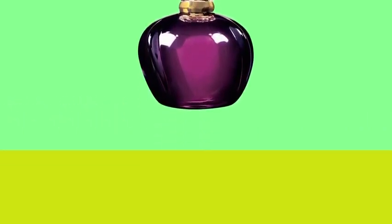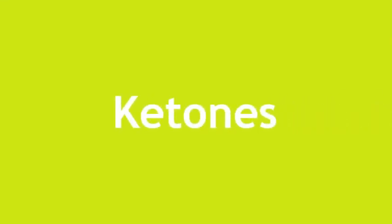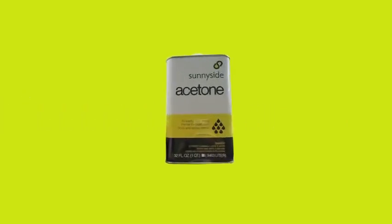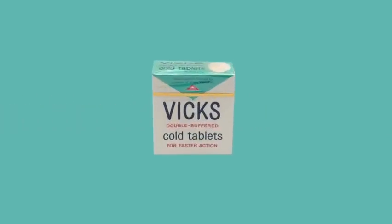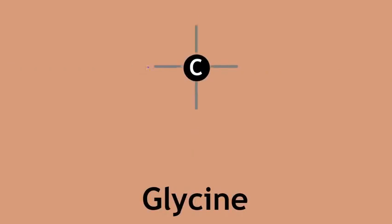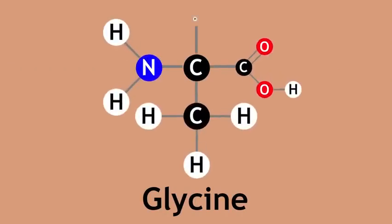There are lots more functional groups. Esters which give molecules a sweet smell and make them useful for perfumes and flavourings. Ketones which make molecules useful as solvents. Amines which can be used as dyes and useful in making medicines. Some molecules have more than one functional group and give molecules different properties still.